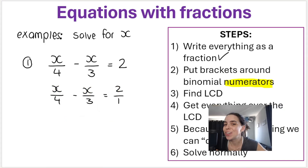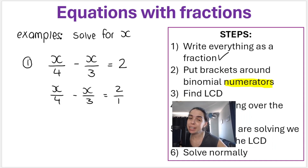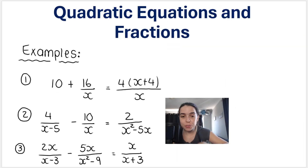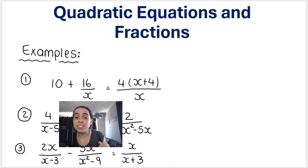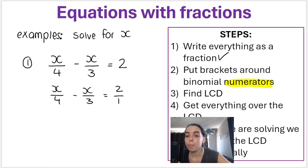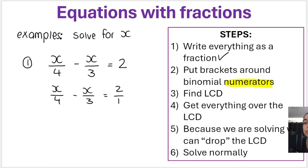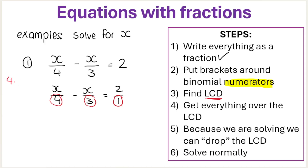The next step is where learners struggle, and that's finding the LCD. For these more simple examples, finding the LCD is not an issue — it's later on. Understanding how to find the lowest common denominator is a very important skill in math. Look at the denominators — the bottoms of the fractions. LCD is lowest common denominator. What is the smallest number that 4, 3, and 1 can divide into without a remainder?